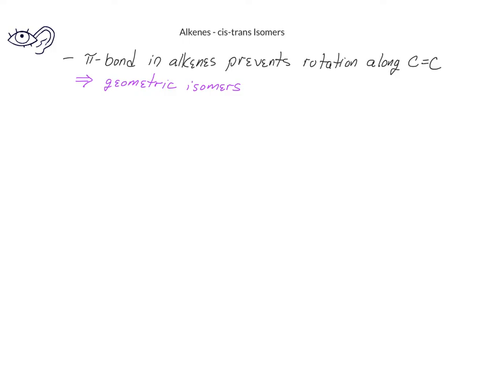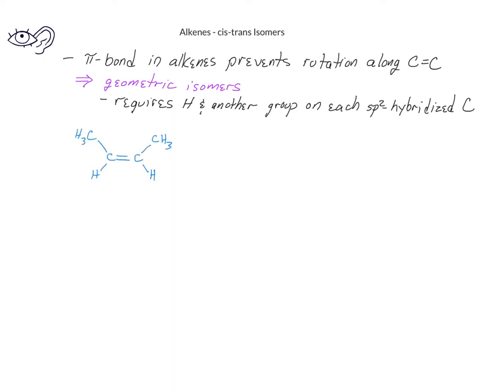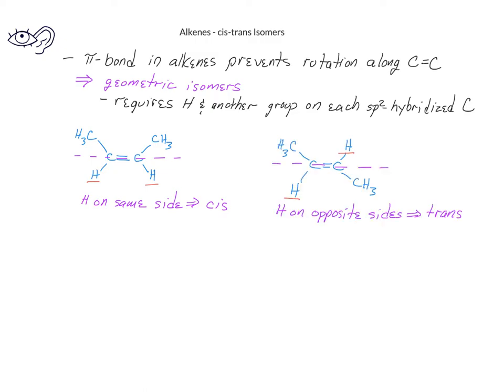If each of the carbons in the carbon-carbon double bond has a hydrogen and one other group, then we could end up with cis- or trans-isomers. We begin by looking at the hydrogen and the other group on the first carbon, and then we compare that to the hydrogen and the other group on the second carbon in the double bond. If the two hydrogens are on the same side of the double bond, we indicate that this is a cis-alkene. If the hydrogens are on different sides of the double bond, we indicate that this is a trans-isomer.